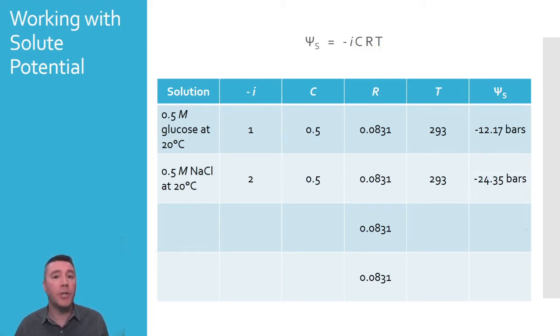So how does changing the concentration affect solute potential? Let's compare that 0.5 molar sodium chloride to a 0.6 molar solution at the same temperature. The only variable that would be different in this case would be the concentration equal to 0.6. The solute potential would be calculated then as negative 29.22 bars. The conclusion that can be drawn is, increasing concentration of a solution results in a decrease of solute potential. If we check out the effect of temperature, we see that temperature and solute potential have an inverse relationship.